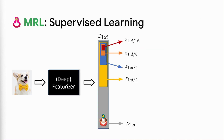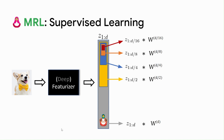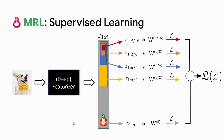Let us see how MRL is adapted to supervised representation learning. Instead of just having a linear classifier for d-dimensional representations — say 2048 dimensions for ResNet-50 — we also have explicit linear classifiers for 1024, 512, and so on down to 8 dimensions. We then take the softmax cross-entropy loss at every single granularity and add all of them up together to jointly optimize the loss. We finally obtain the Matryoshka representations which are multi-granular and can be used for adaptive deployment.